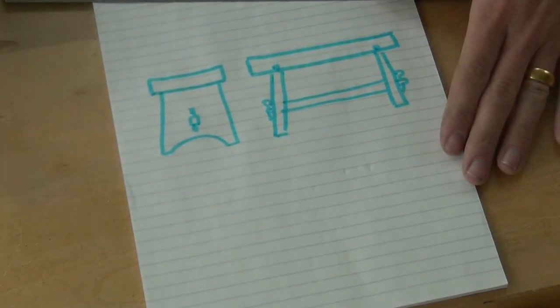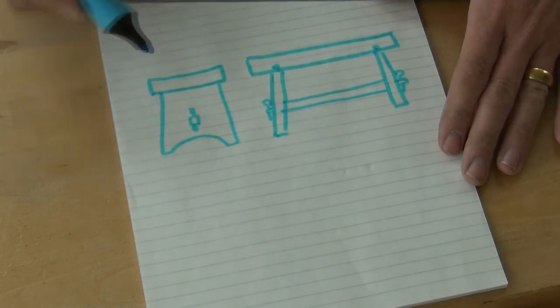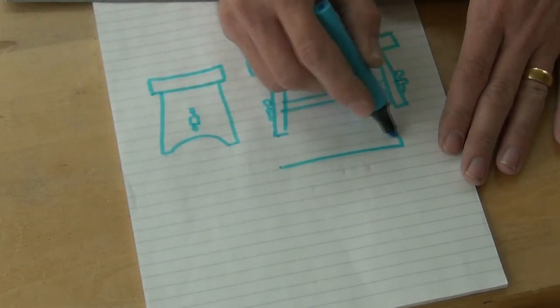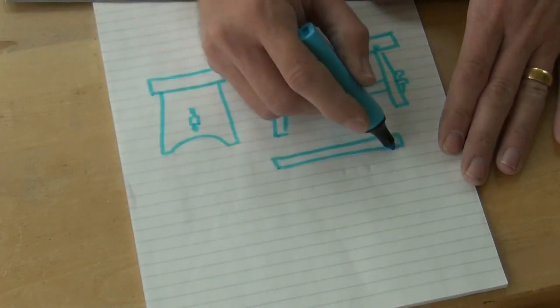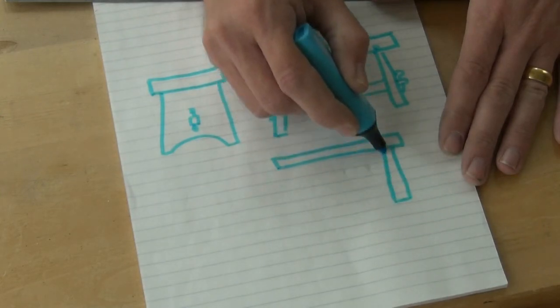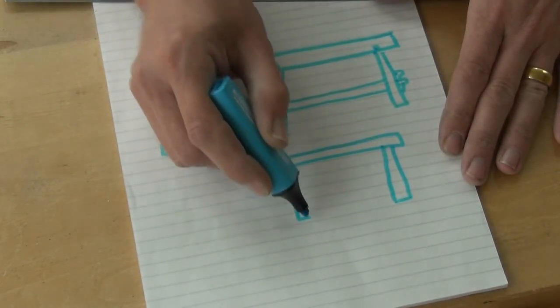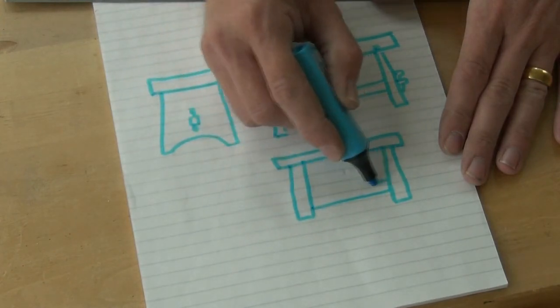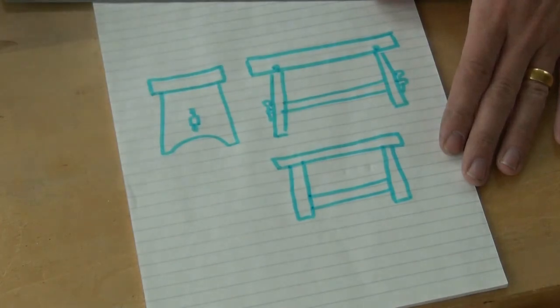In the same way as I did with the box, we'll start with something a little simpler, and we'll work towards this. So the first one we do, will probably just be a simple seat, a couple of legs that come straight down, and a simple stretcher, like so.